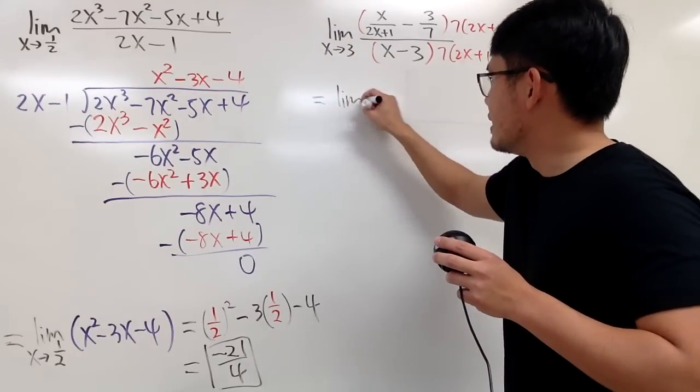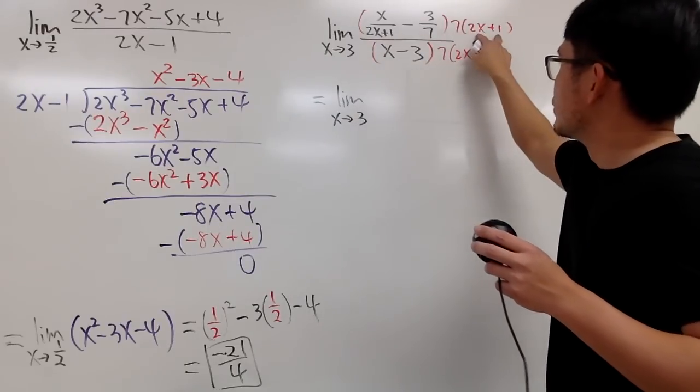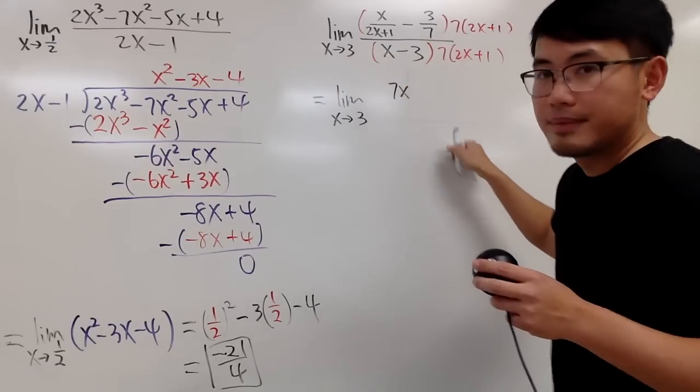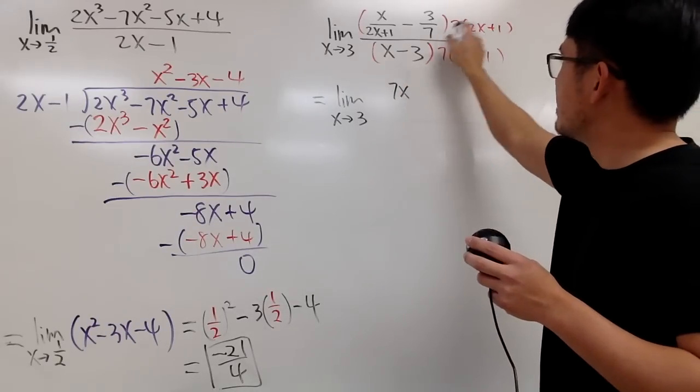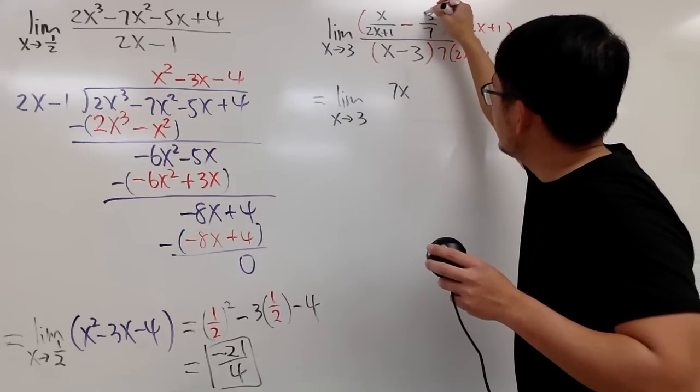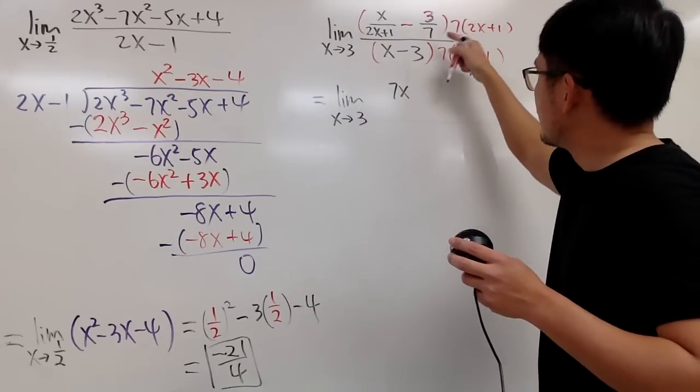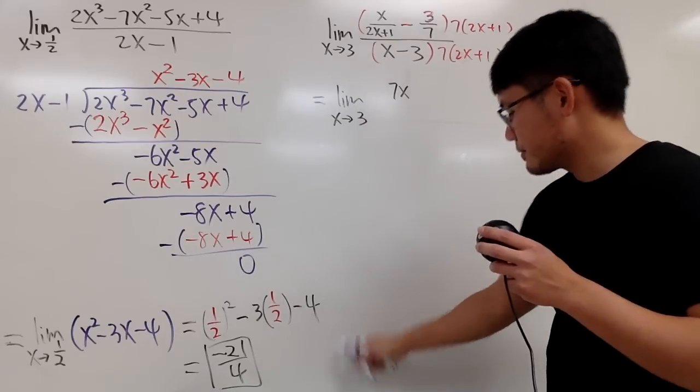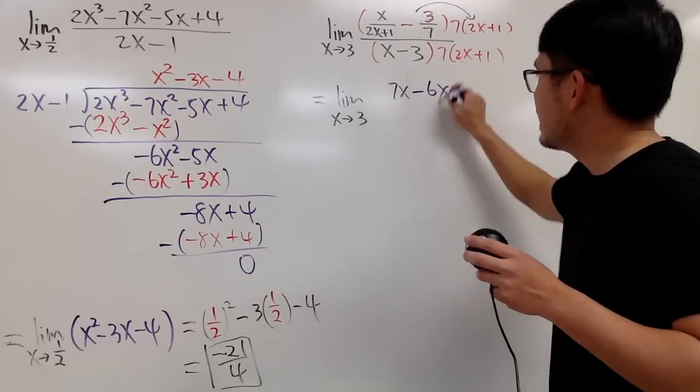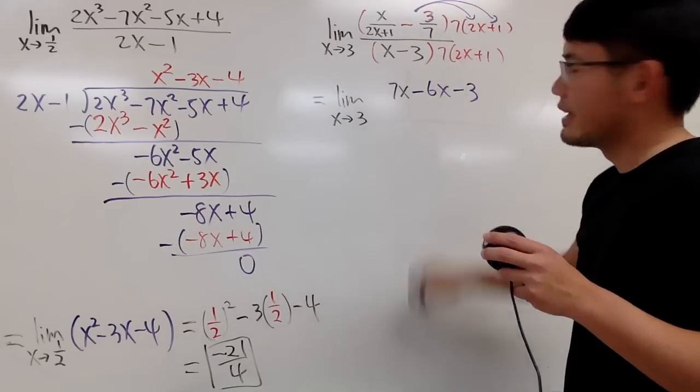All right. Here, we have the limit as x approaching 3. When you take this times that, the 2x plus 1 cancel. So, you just get 7x on the top. And then, when you do this times that, 7 cancel. Don't forget to do negative 3 times this. Right? And perhaps I will just write this down for you guys. Well, actually, I'll just multiply this out. Negative 3 times 2x gives us negative 6x. Negative 3 times 1 gives us negative 3. Like that. Right?